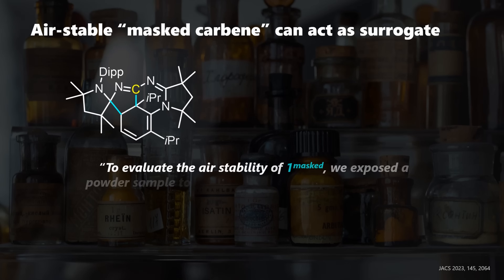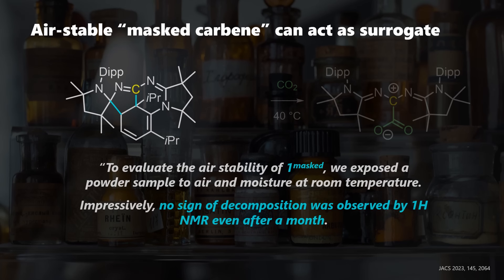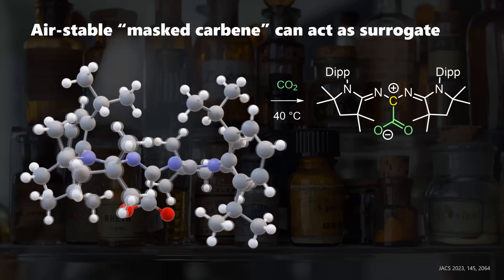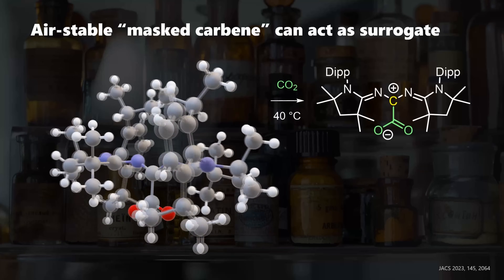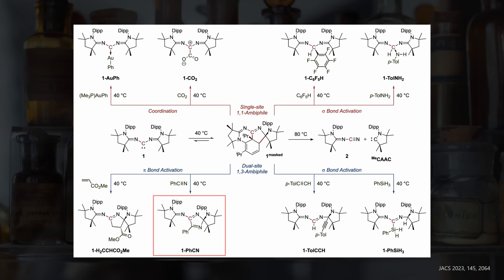The masked carbene was surprisingly stable to air and moisture even after one month of storage. Even under non-inert conditions, the masked carbene proved its worth. Reaction with carbon dioxide in the presence of air and moisture again quantitatively afforded the CO2 adduct. The carbene engages in more exotic sigma and pi bond activations, like addition to nitriles, which are usually the opposite of electron deficient — but to this insanely nucleophilic species, everything is an electrophile.